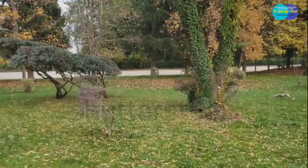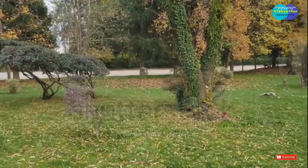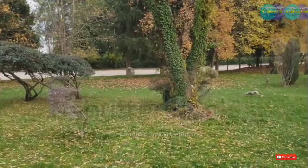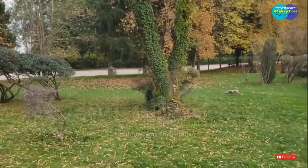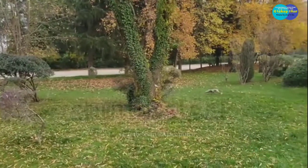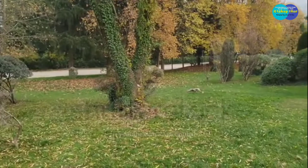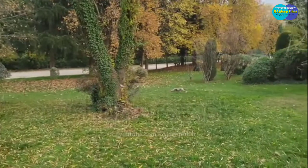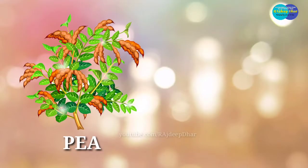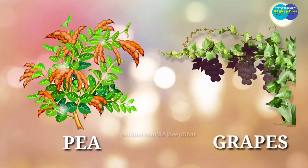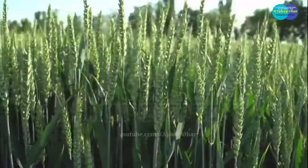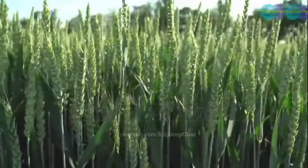Plants that take support on neighbouring structures and climb up are called climbers. They have weak stems and cannot stand erect. Some examples of climbers are pea, grapes etc. Now let's know about stem.